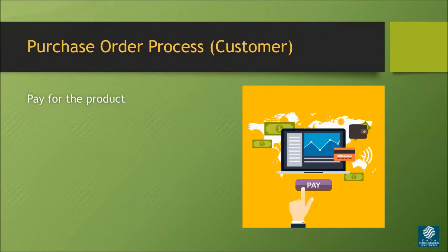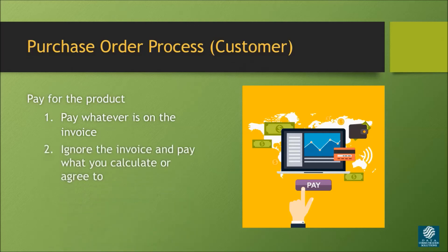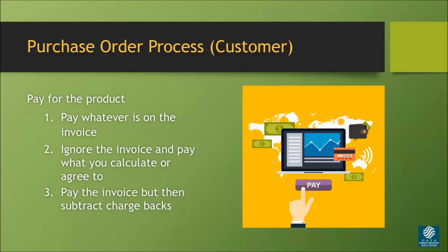Once you've received the invoice, you must pay for the product, which can happen in one of three ways. One, you pay whatever is on the invoice. Two, you ignore the invoice and pay what you calculate or agree to. Or three, you pay the invoice but then subtract chargebacks. This completes the purchase order process.